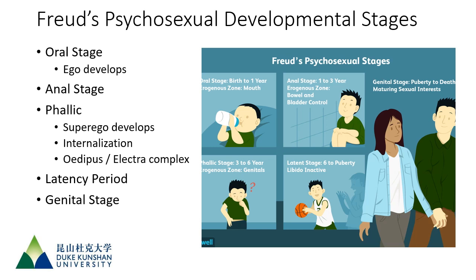After the oral stage comes the anal stage, which happens during the infant's second year. Maturation facilitates the development of control over body processes, including urination and defecation. When things go wrong during this stage, the person can become very controlling — what we call 'anal retentive.' This is what Freud says happens when things go wrong during the anal stage.